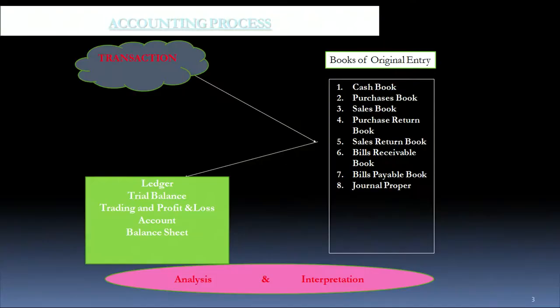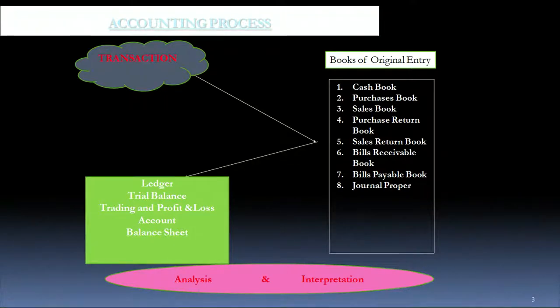You have learned that we identified transactions and recorded them in our books of original entry like the cash book and subsidiary books such as the purchase book, the sales book, the sales return book, the purchase return book, and journal proper. After journalizing, we went to posting these into our ledgers, building up various accounts and making the trial balance to check whether debit and credit entries were correct.